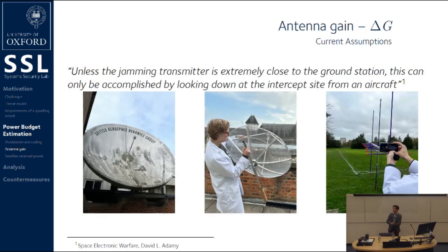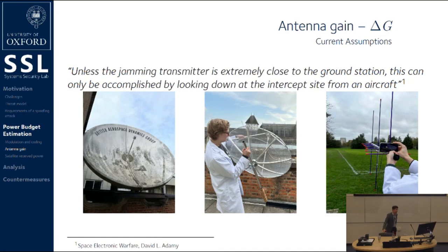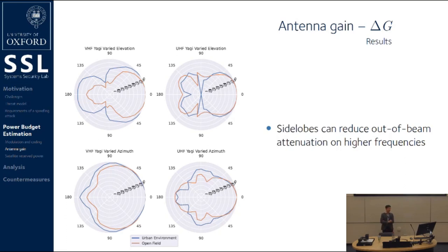Now we consider antenna gain. It's pretty much assumed in the electronic warfare space — not really in the wireless security space — that unless the jamming transmitter is extremely close to the ground station, jamming can only be accomplished by looking down at the intercept site from an aircraft. We should look at these statements with a bit of suspicion, because antennas aren't perfect, dishes aren't perfect, and they amplify signals outside of the main beam through side lobes. We tested this in the real world: we took a number of different satellite dishes and Yagi antennas in an urban environment and an open field to measure how well they respond to spoofing attacks as the attacker goes around from the main beam. There are visible side lobes in some satellite dishes that the attacker can target. Although this attenuates their signal quite a lot, it's much less than targeting other locations, and gives them a shot at overshadowing the signal. Urban environments also seem to increase attack success by allowing multi-pathing.